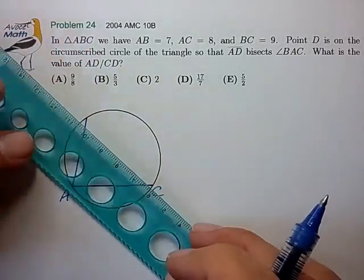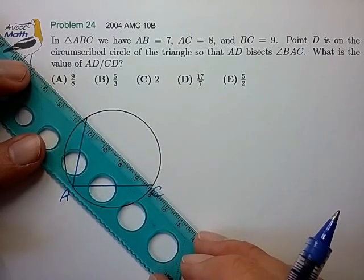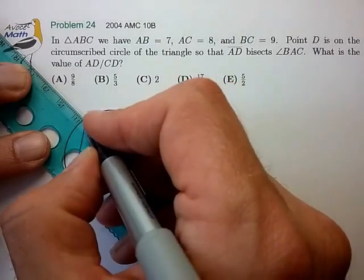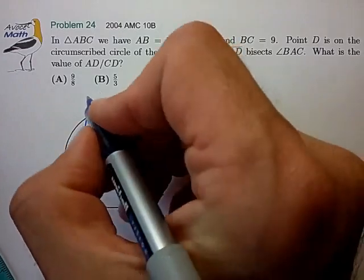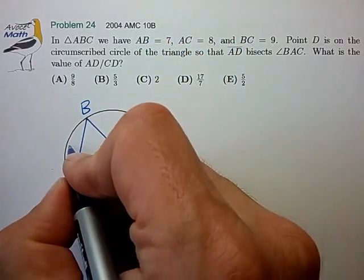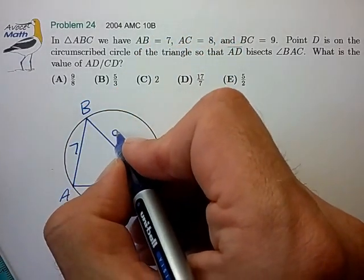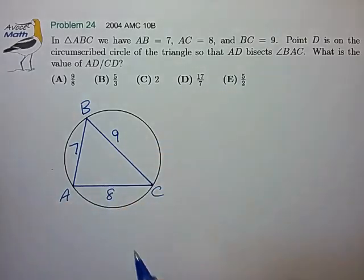And then BC, of course, would be slightly larger than AC. And that looks about right. So, AB of length 7, BC of length 9, and AC of length 8.